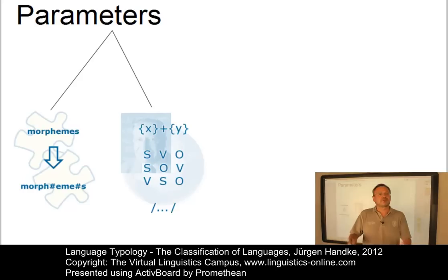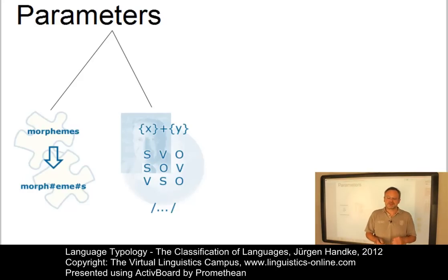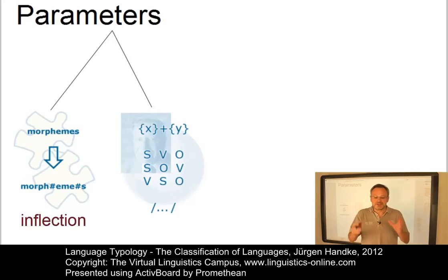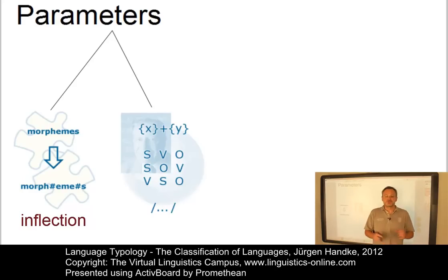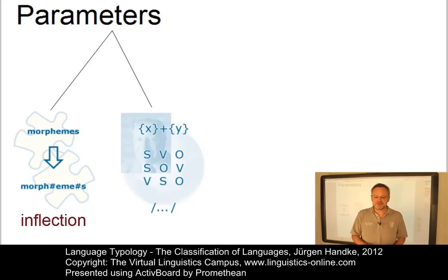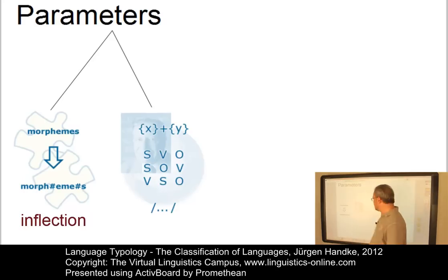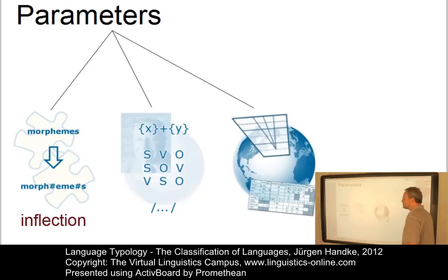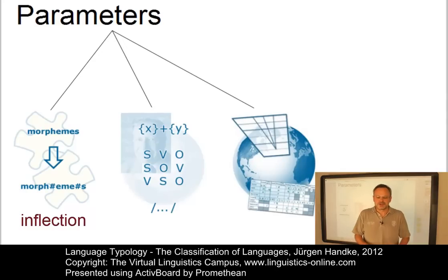Whereas the first parameter — the morphological or structural one — classifies languages on the basis of their word structure, in particular in terms of its inflectional properties, the second parameter uses the sequence of the basic functional elements of clause structure, i.e. subject, verb and object. A third parameter can be used to classify languages on the basis of their phonological structure.